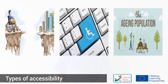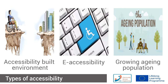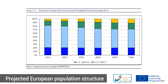Just a couple of words about the types of accessibility. The most important ones are accessibility of the built environment — which is about wheelchair access and much more — and then e-accessibility, the accessibility of all ICT solutions around us. In the past, accessibility was seen as necessary especially for people with an impairment, but nowadays there is a much larger focus on the growing aged population, which also sometimes needs assistive and accessible solutions.